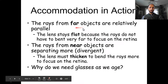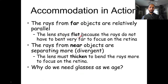Far objects have light rays coming in nearly parallel, so you don't have to bend them much. Near objects have rays diverging away from each other, so the lens must thicken to bend those rays more.